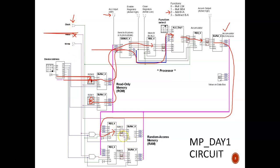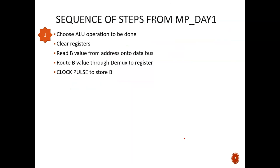We go into write mode, flip a clock, and store the result. In total there were three broad steps. Step one: choose the ALU operation, clear the initial registers, read the B value from the address onto the data bus, route it through the D multiplexer to the register, and run a clock pulse to store B into the temporary register. These are all the steps that need to happen before that first clock pulse.